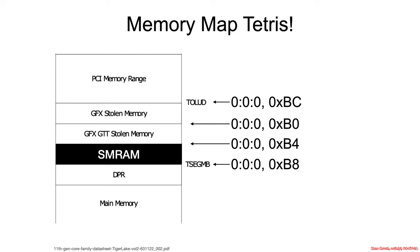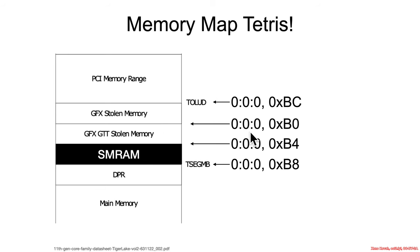Zooming in from the 11th generation data sheet, you've got the PCI memory range and then Toled. Toled is defined at bus 0, device 0, function 0, offset BC. The graphics stolen memory starts at bus 0, device 0, function 0, offset B0.